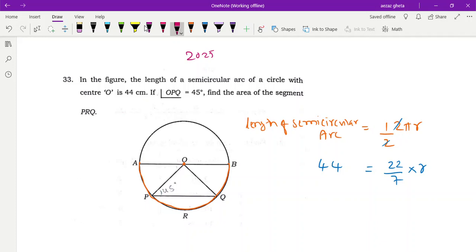Now we can cross multiply this. Seven will come here, 44 into 7. This 22 will take here, so we'll get 22r. 22 into r is equal to two sevens, which is 14 centimeters. So r is equal to 14 centimeters.